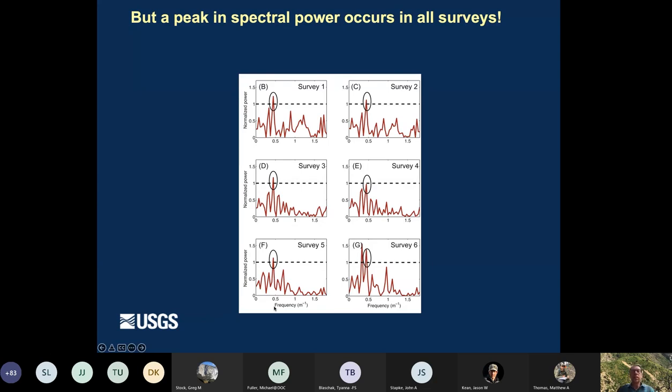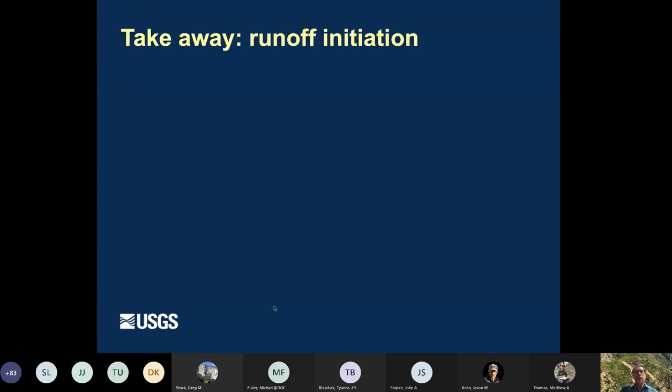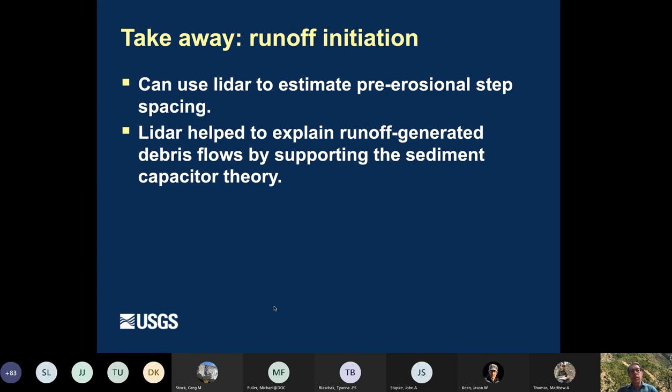So what we saw was there's this peak in spectral power at about two meters where we saw steps at that survey six. But what was interesting is when we put this in the context of all the other surveys, we also see a peak in spectral power in the same place. And what this means is these steps in the landscape where you have sediment in between, they kind of work like a staircase that's covered in snow. So you might cover a staircase in snow, but you might, if you had a fine enough measurement technique, you might be able to still see the effect of the stairs that are underneath that snow. So that's kind of the observation that we made in this case. So the takeaway from this runoff initiation is that we can use LIDAR to estimate these pre-erosional step spacing and LIDAR really helped explain the runoff generation generated debris flows and it helps to support this sediment capacitor theory.